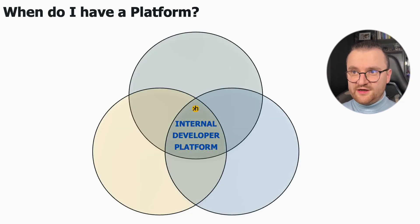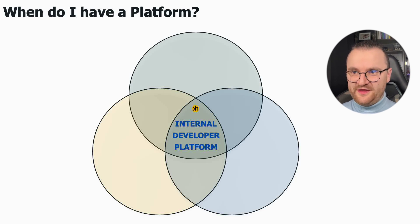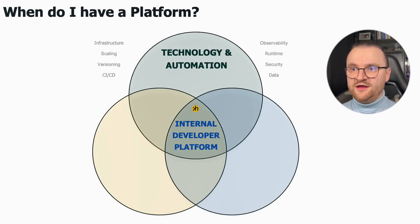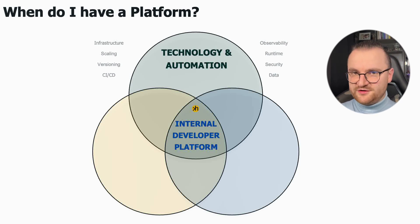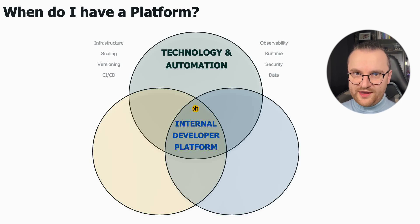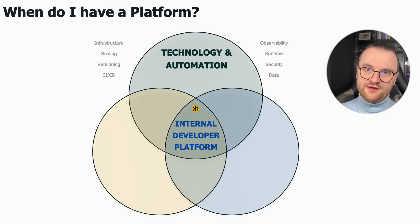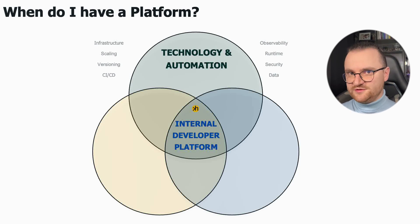There are three pillars I see as necessary to succeed with an internal developer platform. The first is an obvious one: we need to have the process of software delivery, lifecycle, and operations covered with supporting tools — not to have a mess, not to do things manually, and to have an easy way for developers to troubleshoot and manage applications. Those tools are runtime, observability, security, networking, deployment, database automation, API exposition, and certificates.